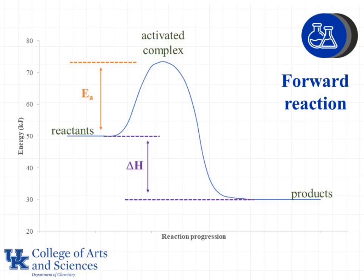What we can also figure out from this is the enthalpy, or the change in energy of the reaction — the value of the energy of the products minus the value of the energy of the reactants to get the enthalpy of the reaction. Notice that the enthalpy of the reaction is the same regardless of the activation energy. For this example, delta H will be less than zero because the products are around 30 and the reactants around 50, so 30 minus 50 will result in a negative number.